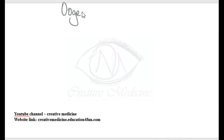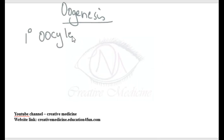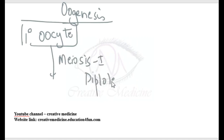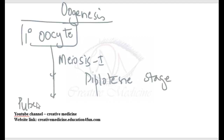Primary oogenesis gets arrested in the diplotene stage as a primary oocyte, with meiosis I arrested at the diplotene stage of prophase I — normally at birth. At puberty, the primary oocyte gets converted to a secondary oocyte and the first polar body is formed.